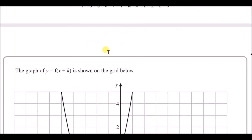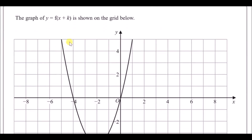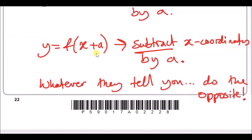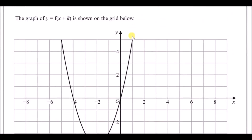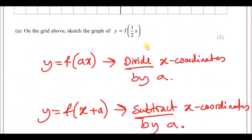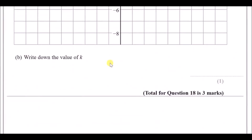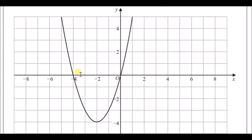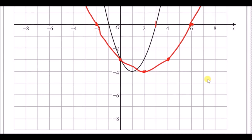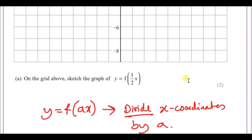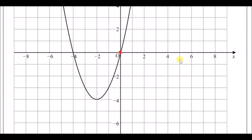For part b, the graph shown is y = f(x + k). Looking at where the curve crosses zero, it moved from x = 3 to x = 0 — it traveled 3 to the left. Since f(x + k) shifts the graph left by k, k = 3.